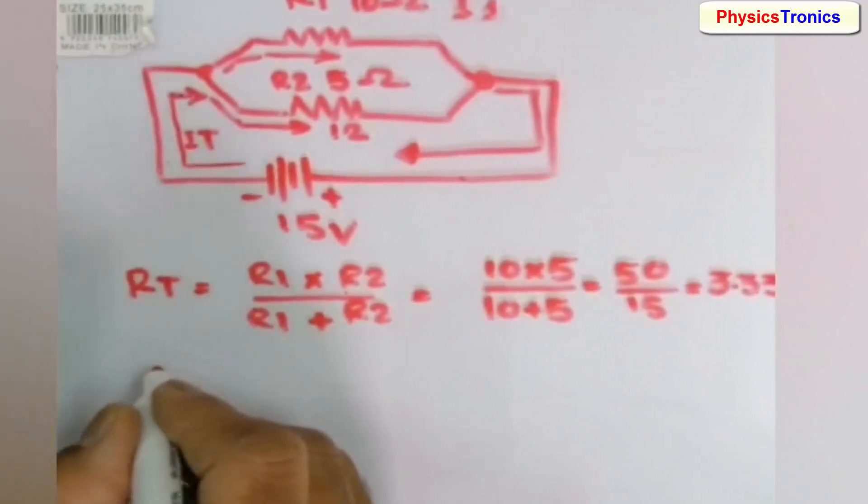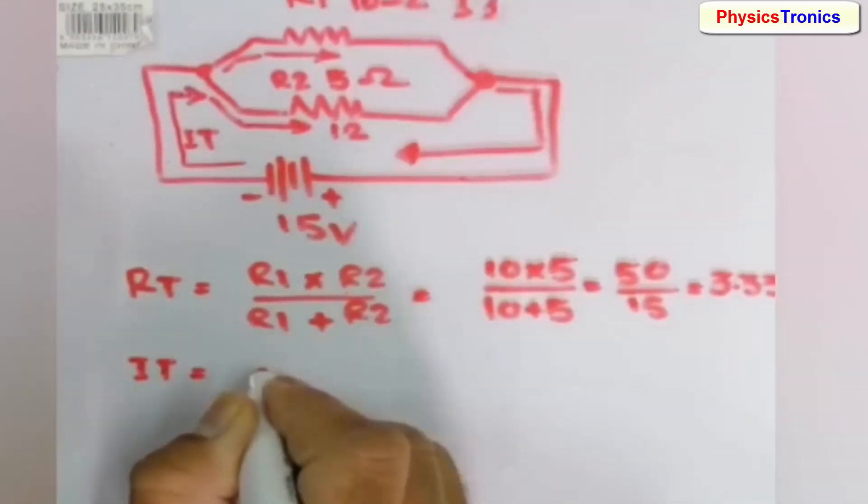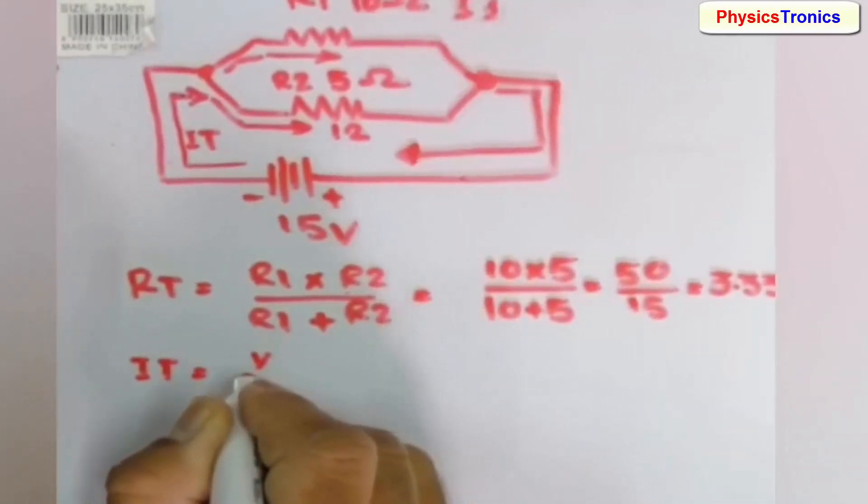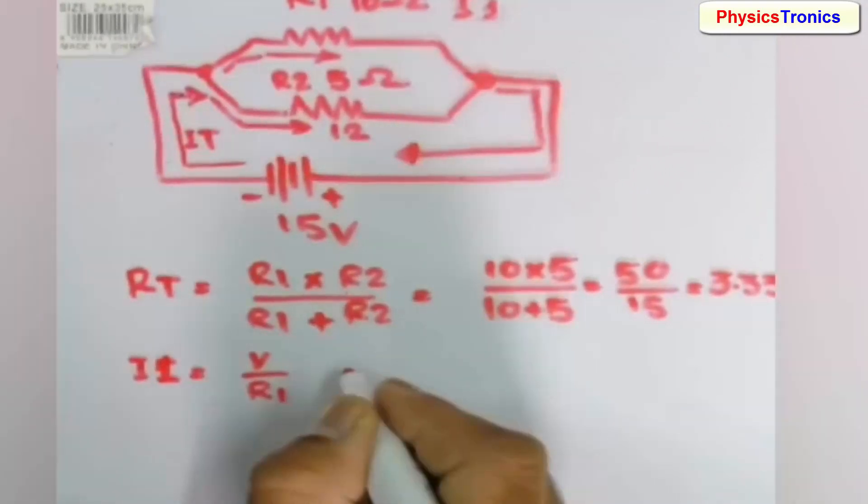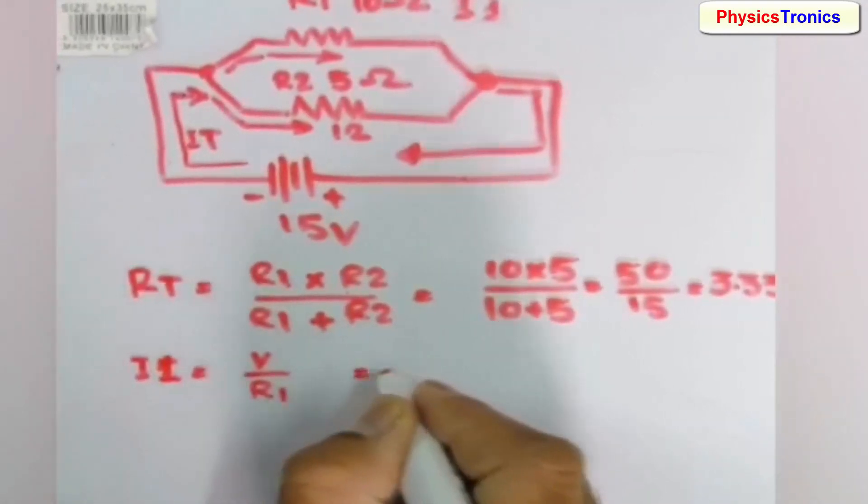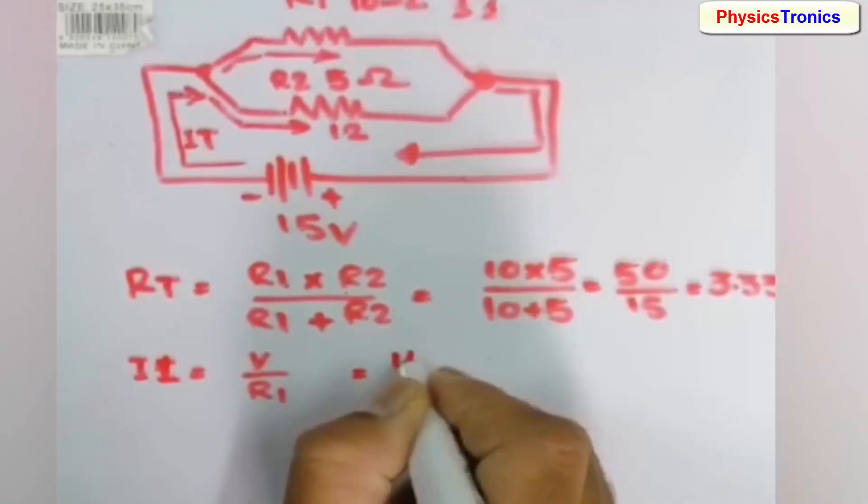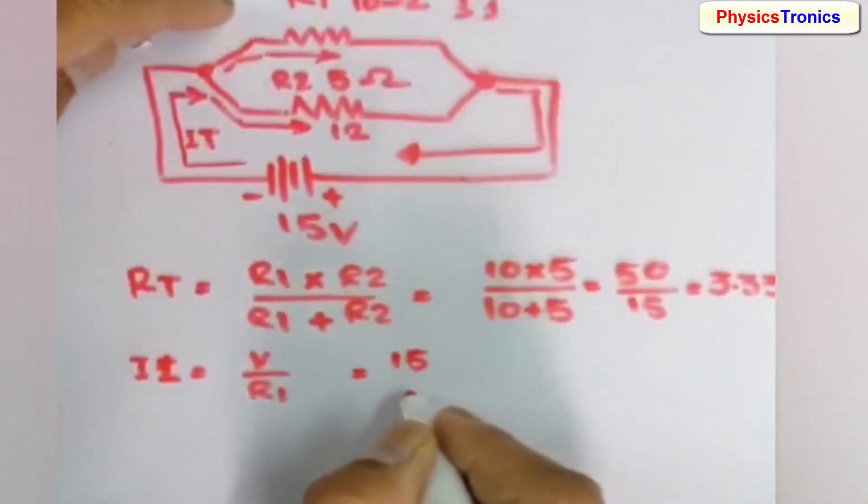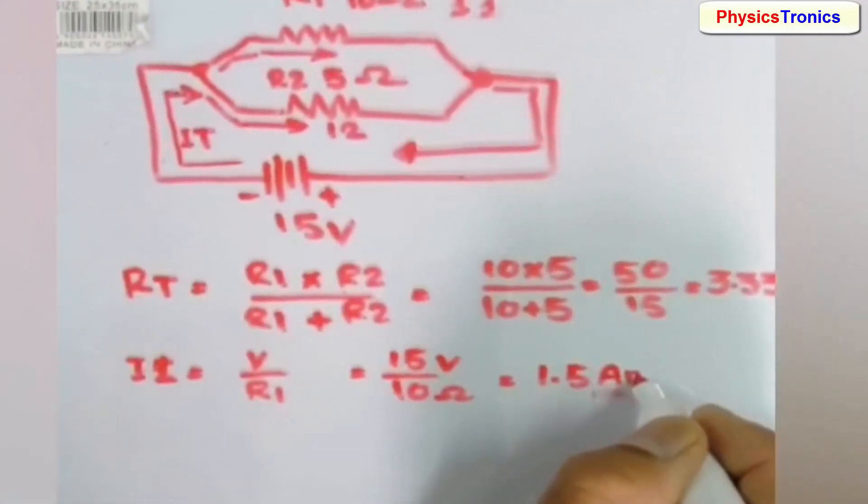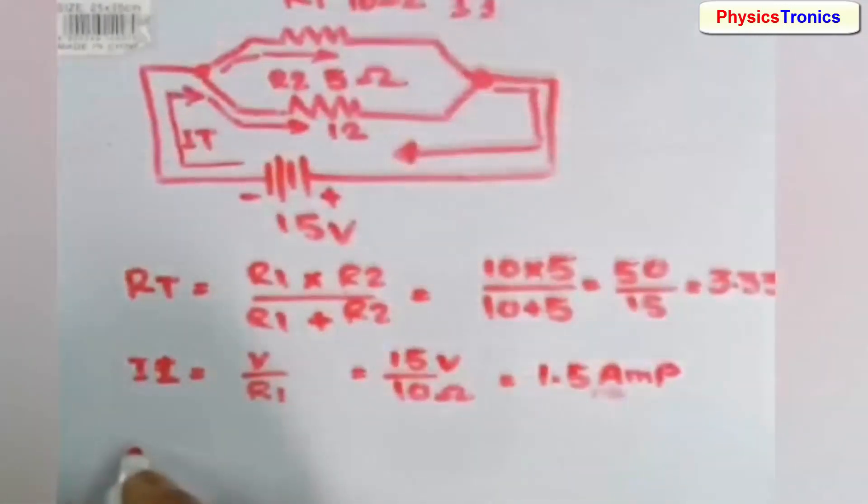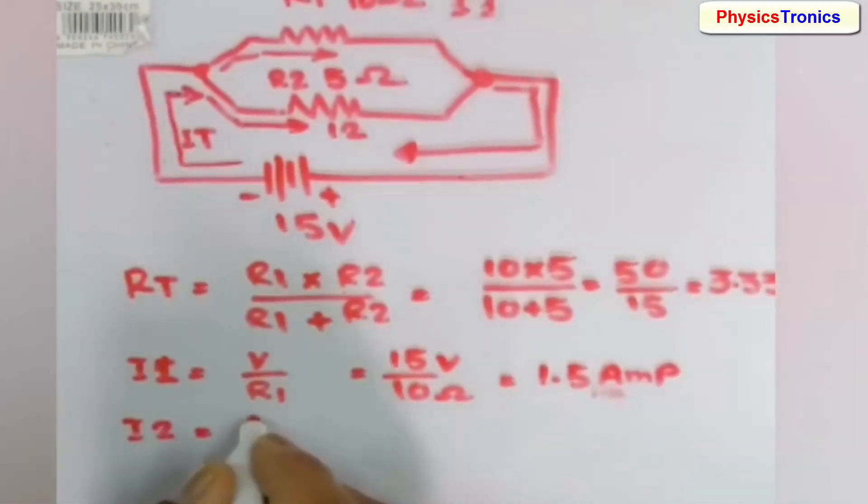We calculate RT equals 3.333 ohms. Now we will calculate I1 in branch number one. I1 equals V over R1. Because voltages are the same in parallel, and every resistor is connected directly to the battery terminal, every resistor will have the same voltage. In the first branch, R1 branch, it is 1.5 amperes current.